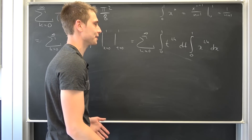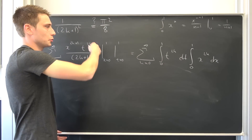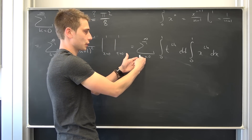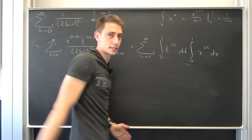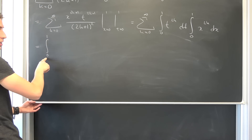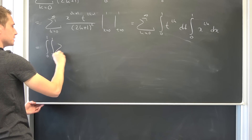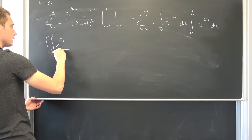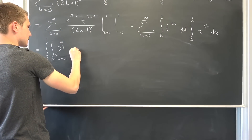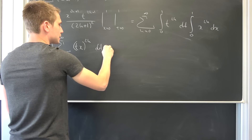We can Fubini this — those integrals are strictly positive, this sum converges absolutely and uniformly, so we can bring it together to a double integral. We can also bring the infinite sum inside, meaning after interchanging the limit we get a double integral over the unit square of an infinite sum from k equals 0 to infinity of t times x to the 2k power, dt dx.